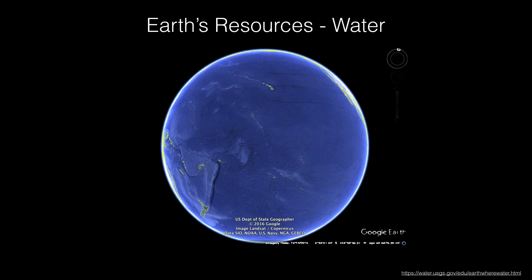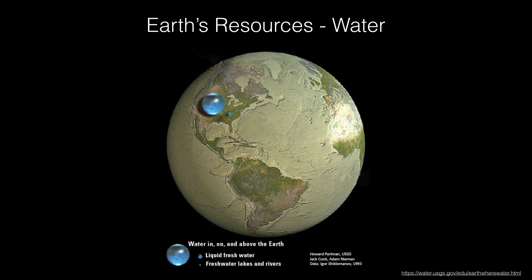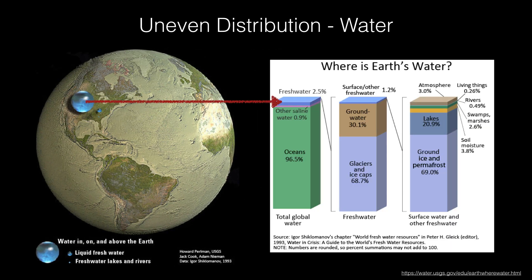Let's now talk about how water is distributed on Earth. We know that about two-thirds of the planet is covered in water, but not all of that water is drinkable. All of the fresh water on Earth that is not salt water accounts for only 2.5% of all the water that exists. Of that 2.5%, groundwater makes up 30.1%, with the water in lakes and rivers being an even smaller fraction.